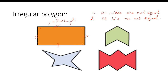Both points: first, all sides are not equal in the case of a rectangle. Here you can see all sides are not equal, and because all sides are not equal, it is not a regular polygon.